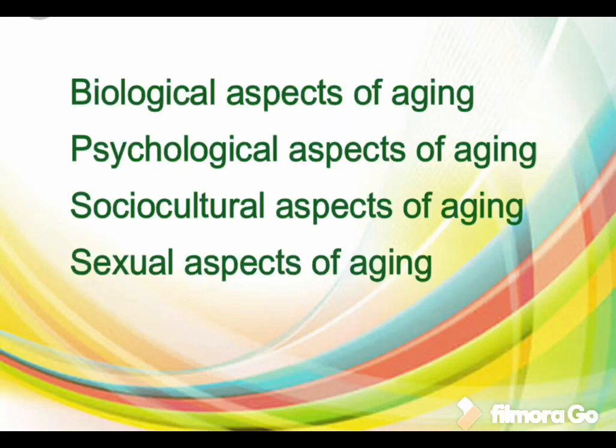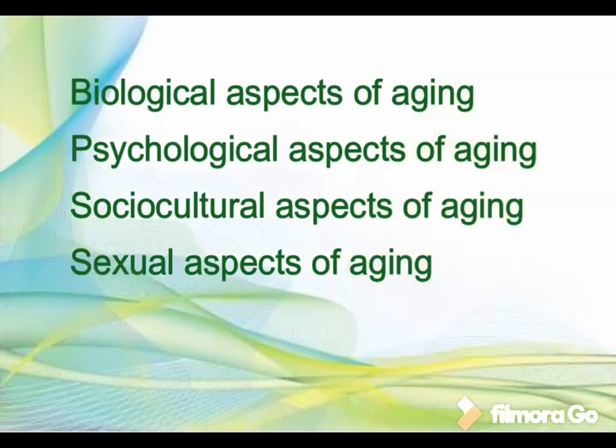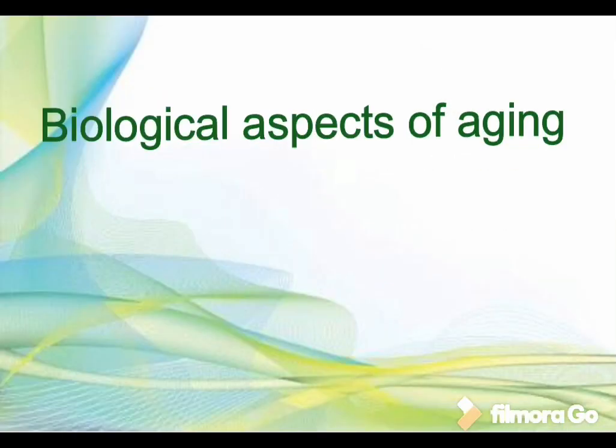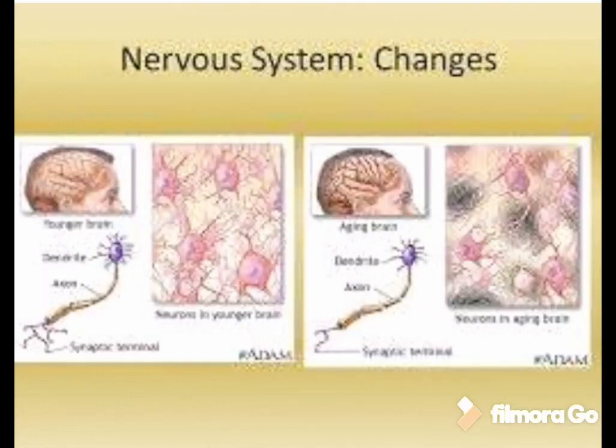There are mainly four aspects of normal aging: first, the biological aspects of aging; second, the psychological aspects of aging; third, the socio-cultural aspects of aging; and fourth, the sexual aspects of aging. Individuals are unique in their psychological and physical aging process.